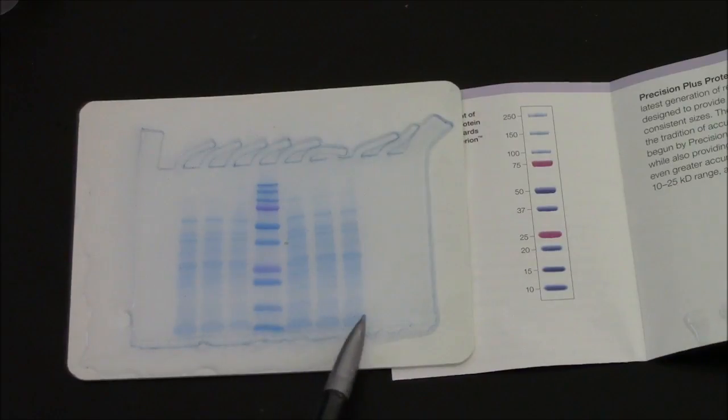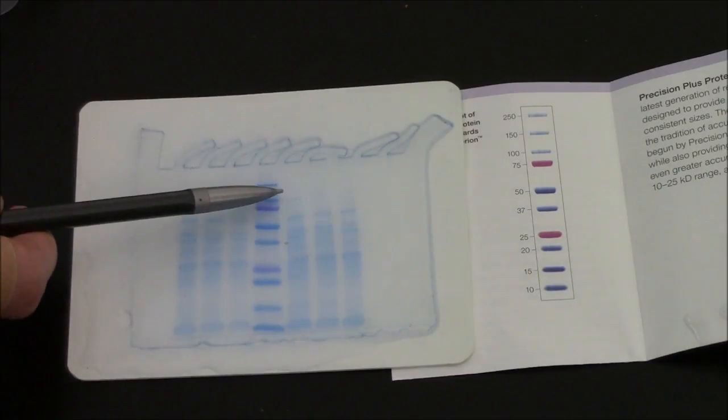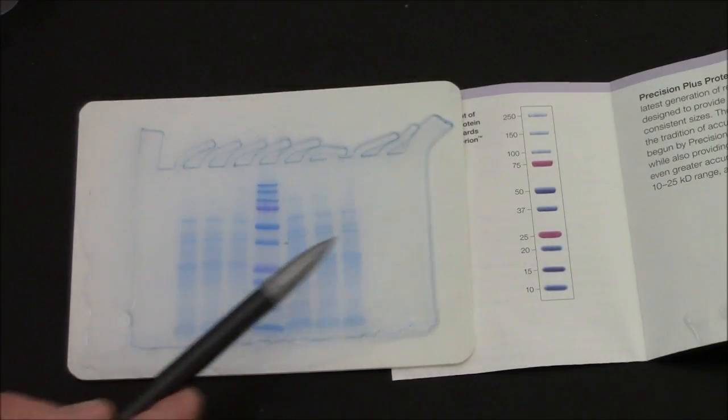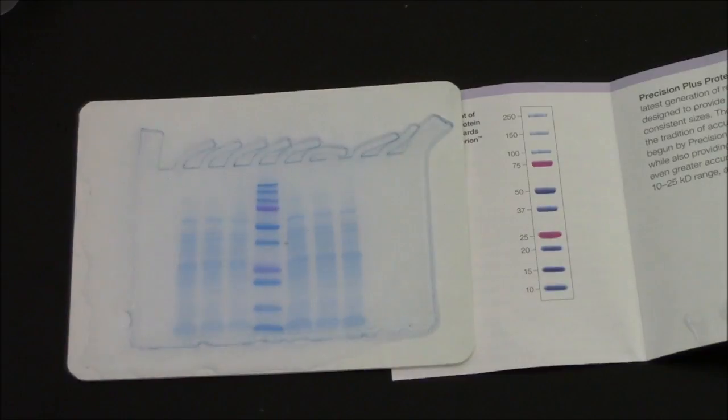Comparing the different groups, they all look about the same. Some groups have more of this high molecular weight protein up here. That's between the 75 and the 100, very close to 100 kilodaltons.